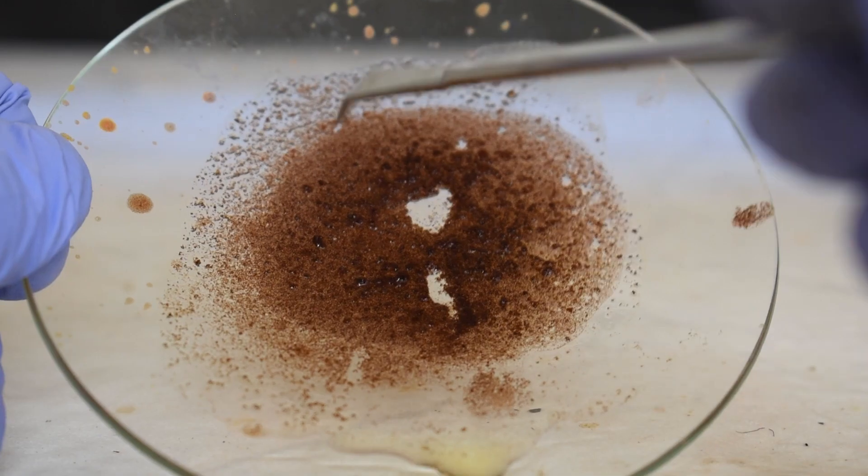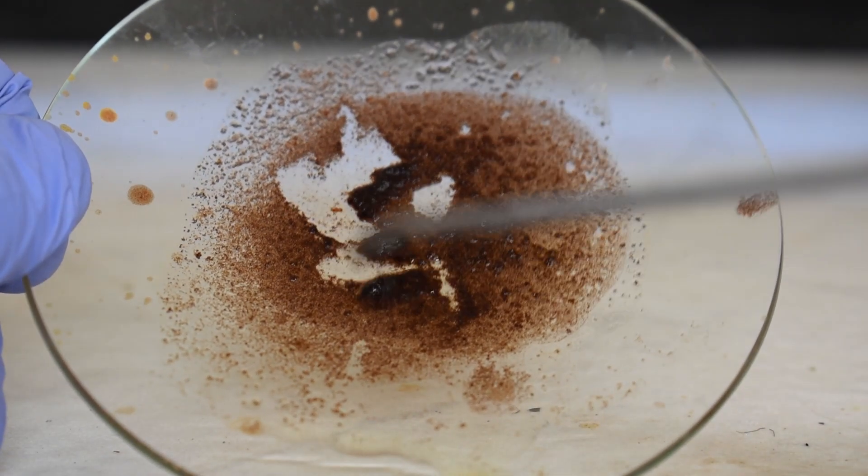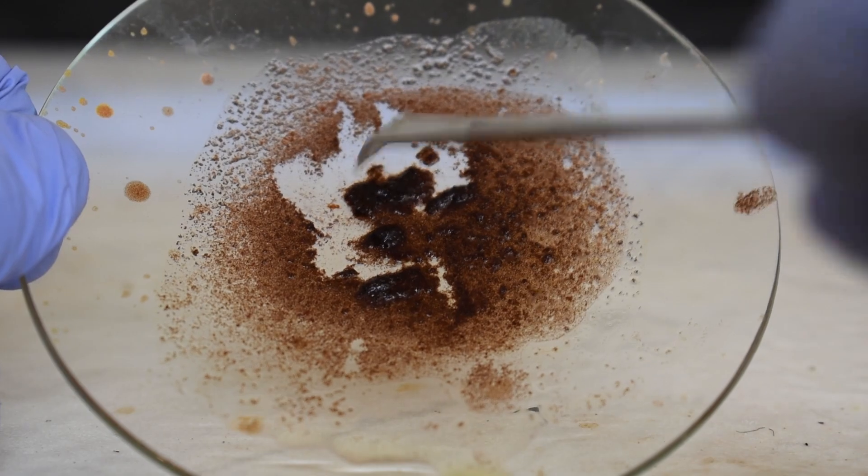However, it is possible to oxidize copper up to plus three and in some cases plus four. The complex that I'll be making today shows off copper three's deep reddish yellow color.